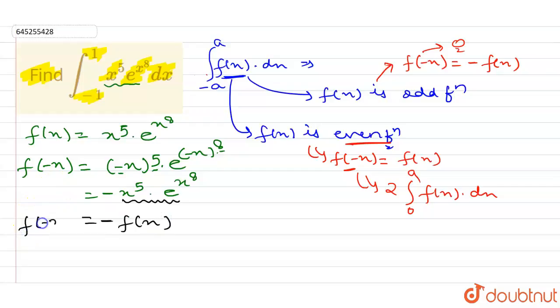So on putting f of minus x, this will give minus of f(x). So it means our f(x) is odd function.